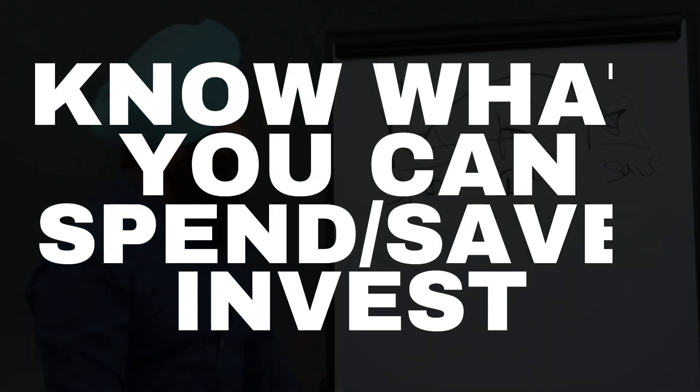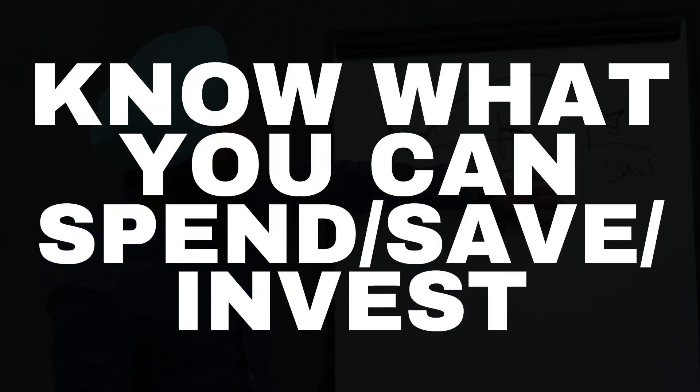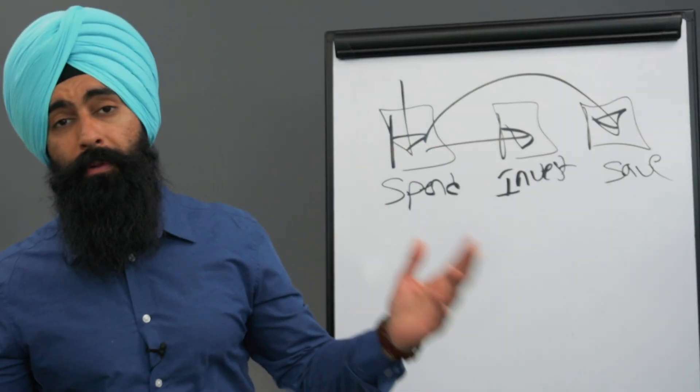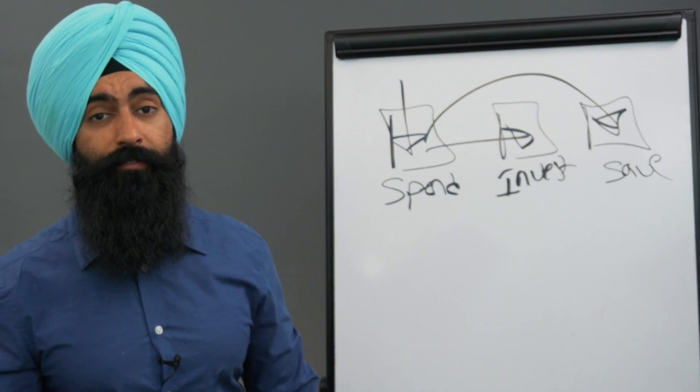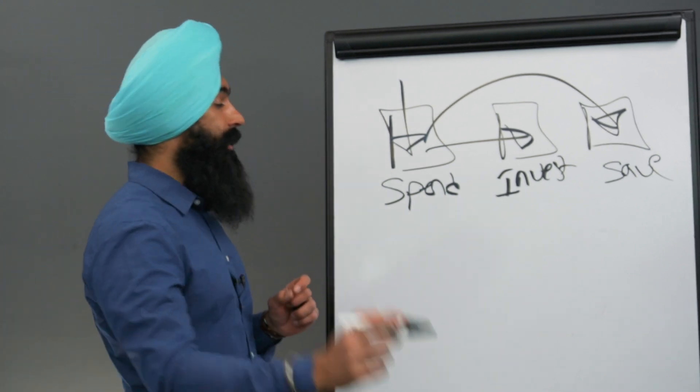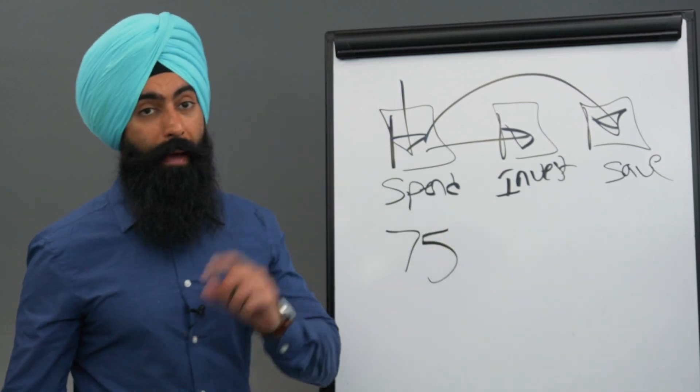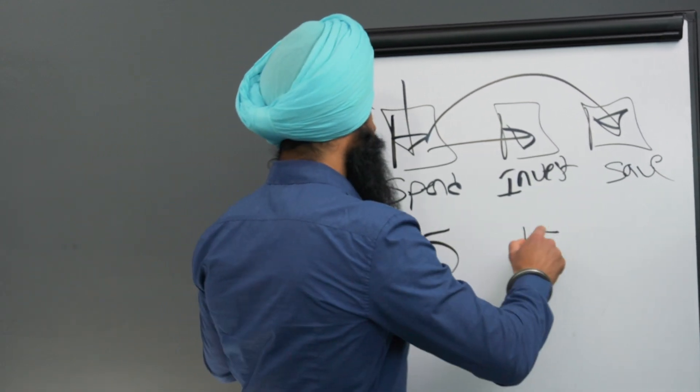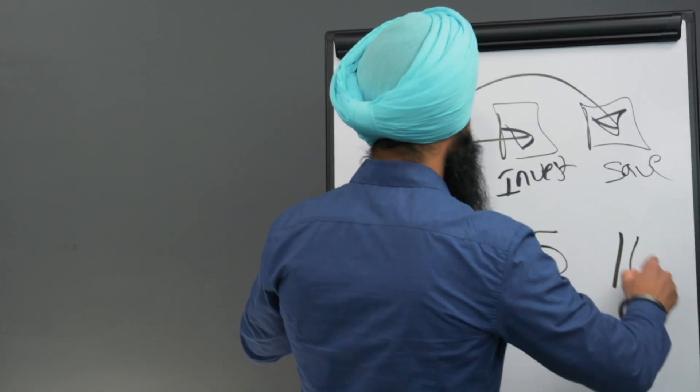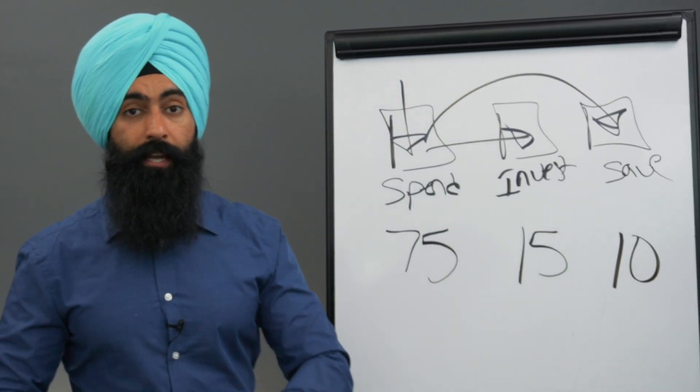The second thing that I want you to do is know how much money you can spend versus invest and save. And a simple place to start is something like my 75-15-10 plan, which says that from now on, for every dollar that you earn, 75 cents is the maximum you can spend, 15 cents is the minimum that you invest, and 10 cents is the minimum that you save.